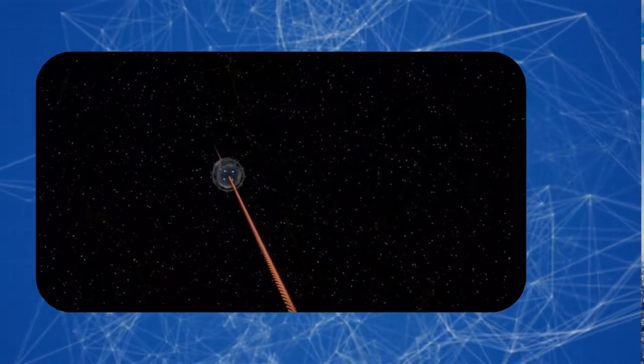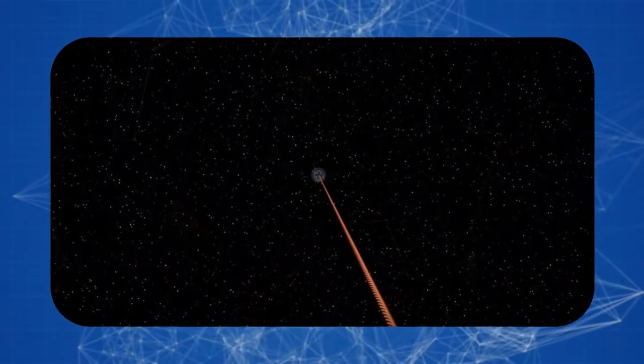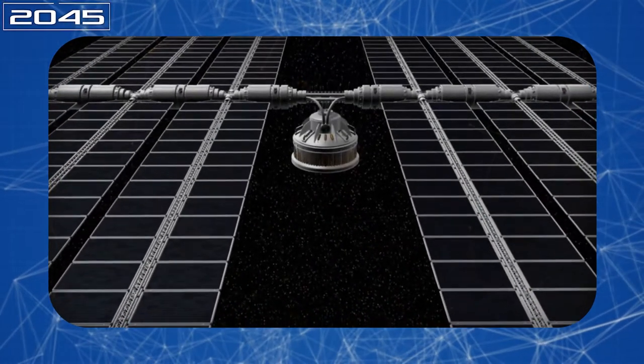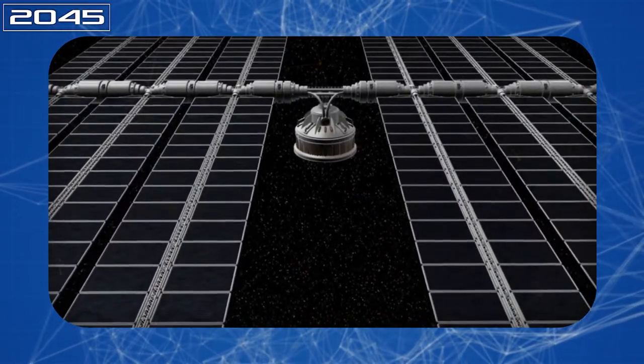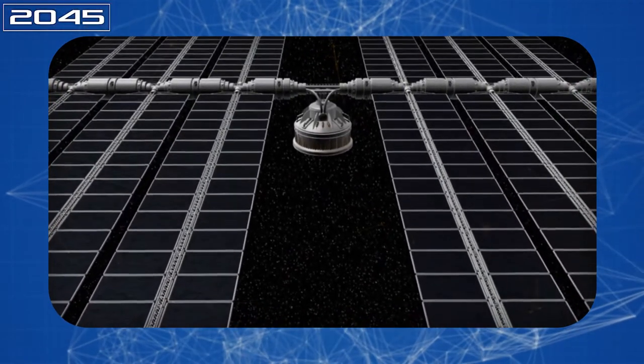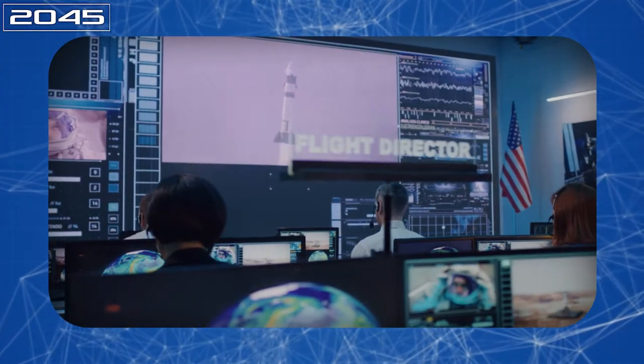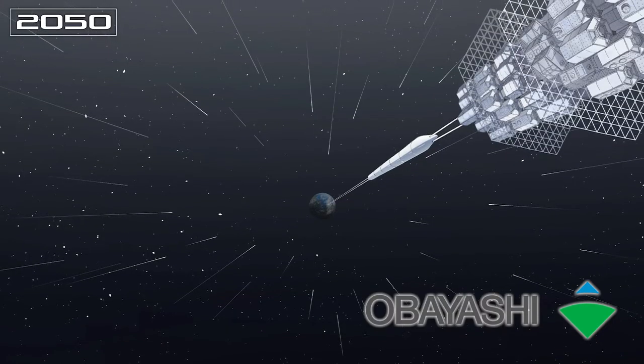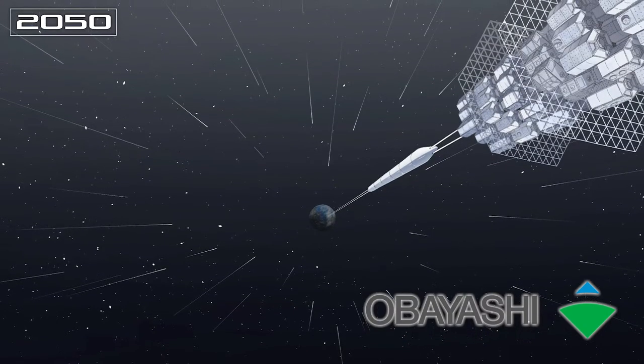Thus, the China Academy of Launch Vehicle Technology has begun working on the first of these projects, with the goal of completing it by 2045. Currently, they're developing reusable sub-orbital rockets needed for constructing the space elevator. The project by Obayashi Corporation from Japan is expected to be completed later, by 2050.